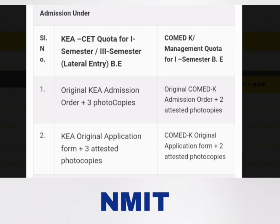The first document for KCET students is the original KEA admission order, which you can download after your KCET choice entry. You have to carry three photocopies of that. Similarly, for COMED-K students it will be called the admission order or allotment letter, and you have to carry two attested photocopies.